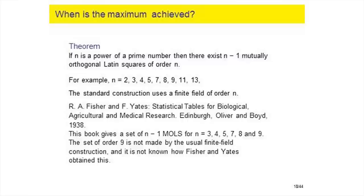Fisher and Yates produced Statistical Tables for Biological, Agricultural and Medical Research in 1938, giving sets of mutually orthogonal Latin squares of maximum size for N = 3, 4, 5, 7 (you can't do 6), 8, and 9. When I came to use the set of order 9, I stopped and thought — this isn't what you'd normally make from the finite field. As far as I know, nobody knows how Fisher and Yates arrived at that particular set of mutually orthogonal Latin squares of order 9.